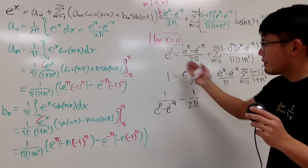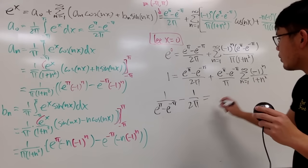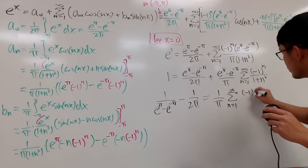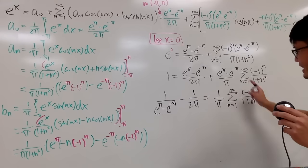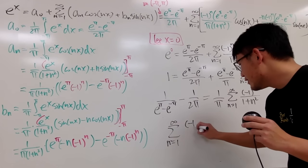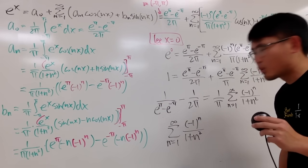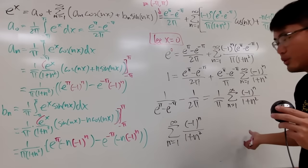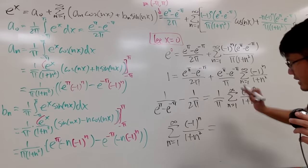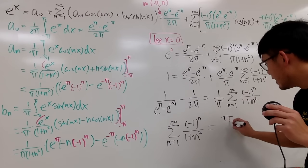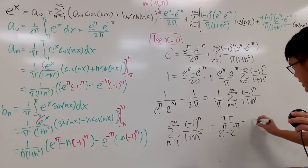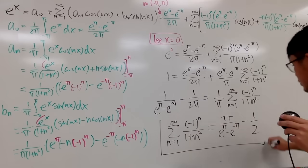Multiplying both sides by π, we obtain the beautiful result: the sum as n goes from 1 to infinity of (−1)^n / (1 + n²) equals π / (e^π − e^(−π)) − 1/2. This is really really cool — you have 1, 2, π, e, a minus sign, and fractions all appearing together!